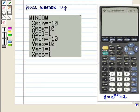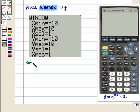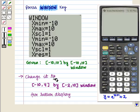For this we press window key and we get the following display on the screen. Here we are given closed interval from minus 10 to 10 by closed interval from minus 10 to 10 window.